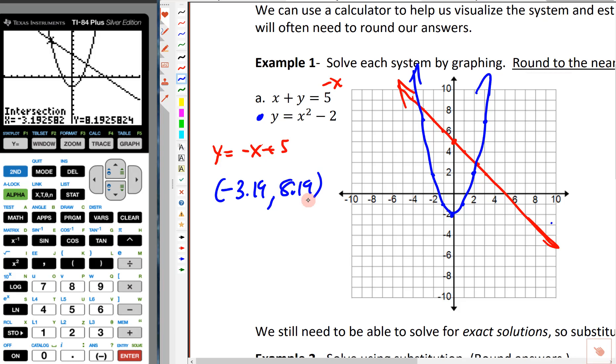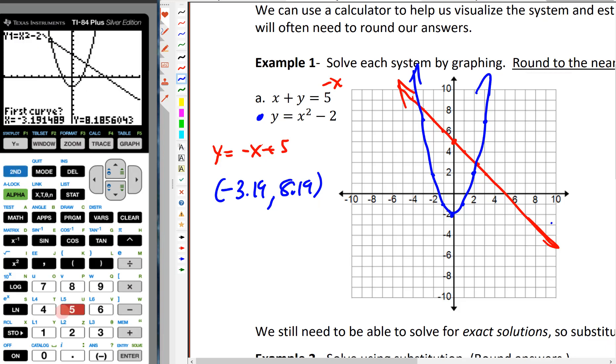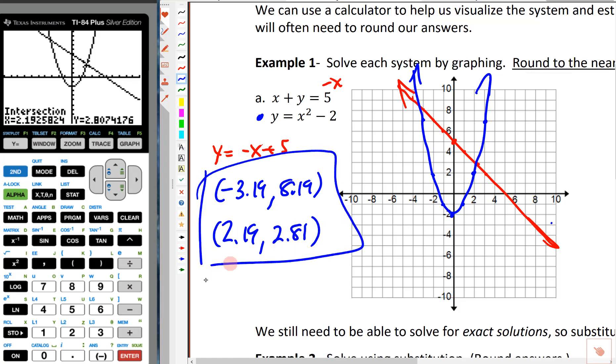And then we repeat the process. We do the same thing again. So I'm going to hit second calculate. Number 5 for intersect. We type in the parabola and the line. Yes. And we've got to get really close to the other one in order for it to find it. So the algorithm that it goes through is kind of complicated. But if there's more than one intersection point, you've got to give it a guess close to the one that you want. So that's going to be 2.19 comma 2.81. Any questions there?